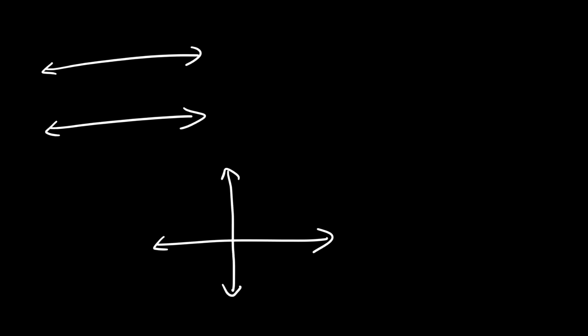Now we need to be familiar with perpendicular lines. Let's call this line A and line B. Perpendicular lines meet each other at right angles — they are intersecting lines and they form 90-degree angles. So we can say that A is perpendicular to B.